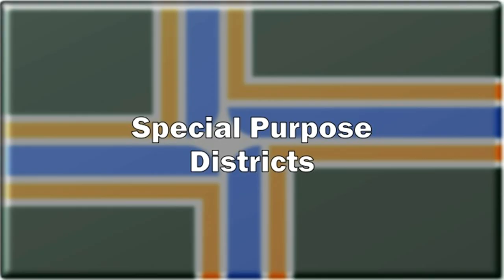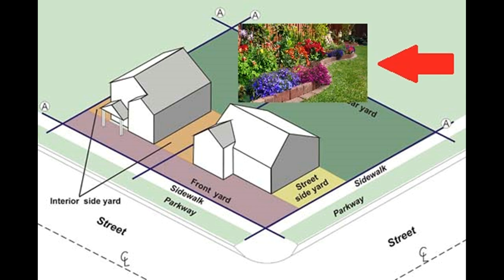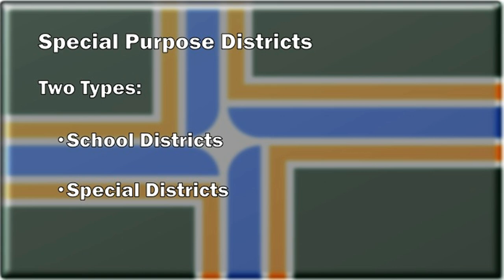Here we come to our final and also least-defined category: special-purpose districts. Our metaphor about the house breaks down a little bit here, but they're kind of like the garden or the reading nook in your living room — an area defined because there's a need for a special purpose, hence the name. There are two types: school districts and special districts. Thanks, U.S. Census Bureau, really doing us a solid there.